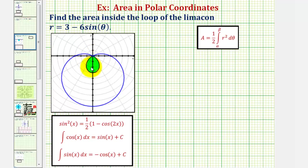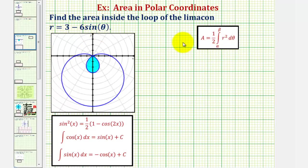To find the area bounded by a polar curve, we use the area formula: area equals one-half times the integral of r squared, integrated with respect to theta from alpha to beta. We know r equals three minus six sine theta, and we need to find the interval of integration that traces out this inner loop of the limaçon.